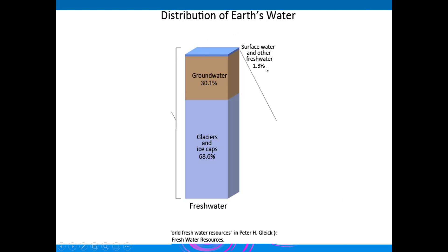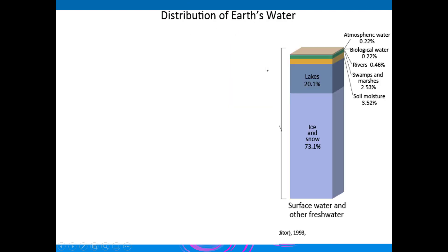Of the surface fresh water, most is again locked in ice and snow. The majority of the fresh water we have available to us isn't really available to us — only what's in lakes and rivers can we actually get to. The moral of the story is we do not have a lot of fresh water at our disposal.